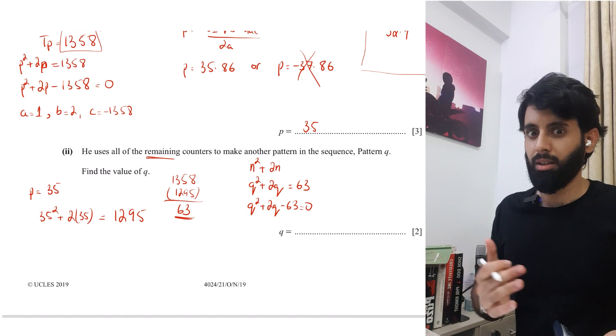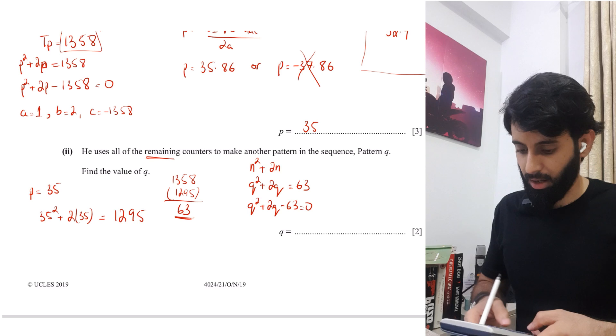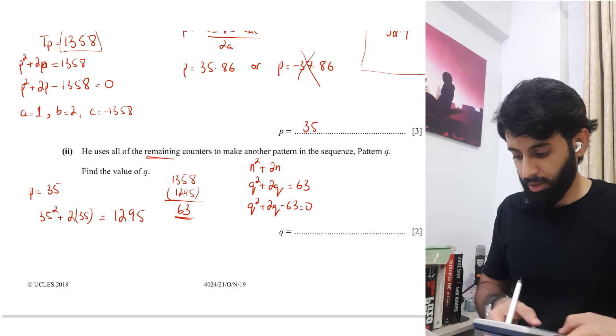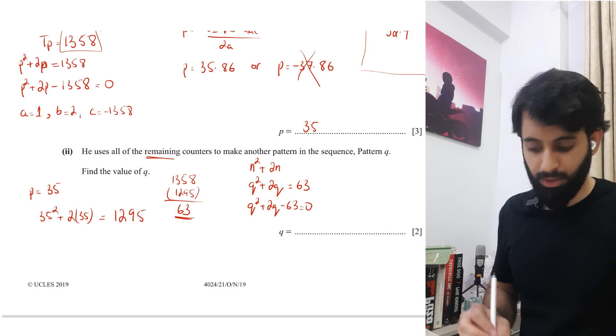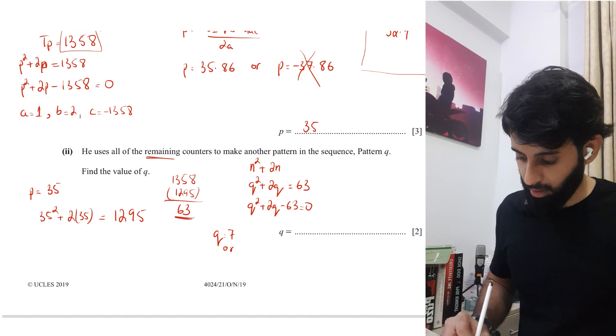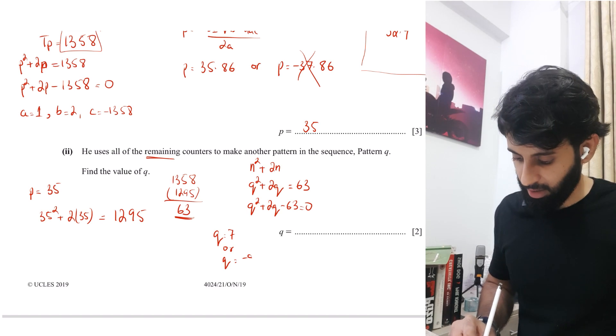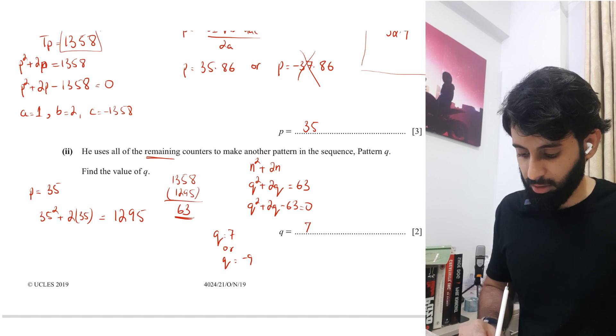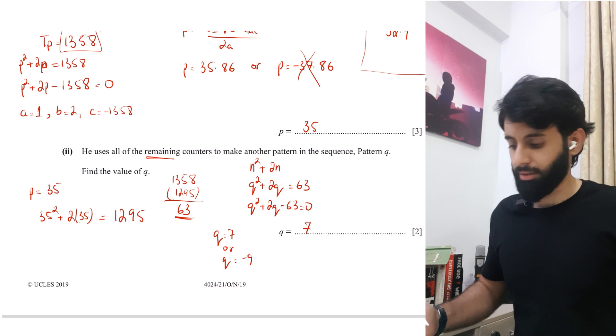Again, I'm going to use my calculator to solve it. Although you can do it mentally factors of 63 that give you two, nine and seven. But again, let's use calculator just to be sure one, two and minus 63. So you have Q is equals to seven or Q is equals to minus nine. Now it's kind of obvious that it has to be seven. Therefore seven is our final answer.